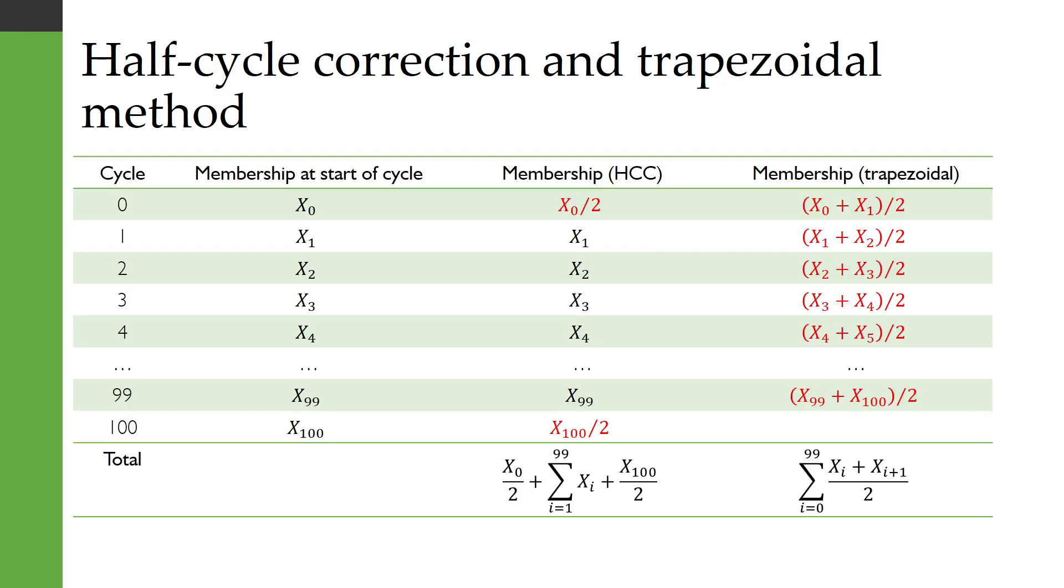So here's how you would calculate for both of them. We've got a model with a number of cycles and we have already calculated the membership at the start of each cycle which is denoted x0. The model is running for 100 cycles so we don't really want to see what happens in the 100th cycle. That's more for us to know what's happening right at the end of the 99th cycle.